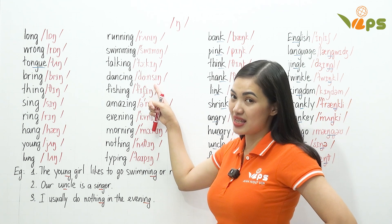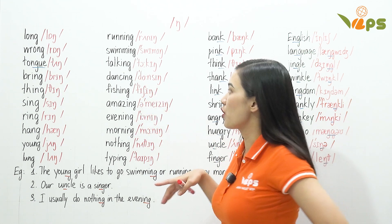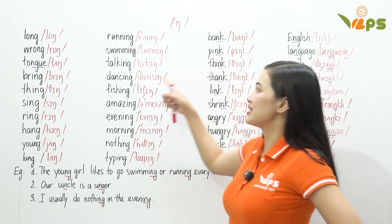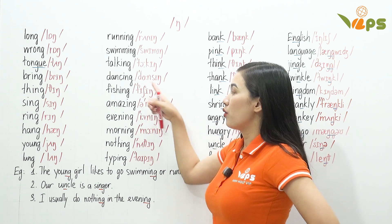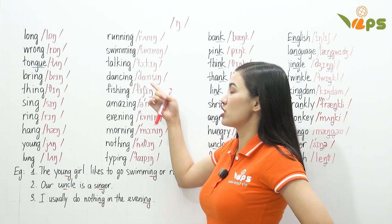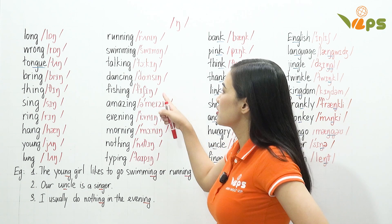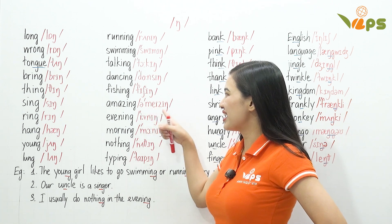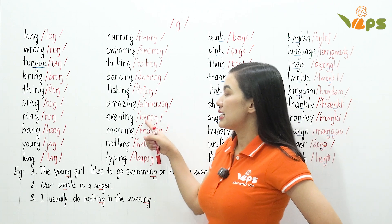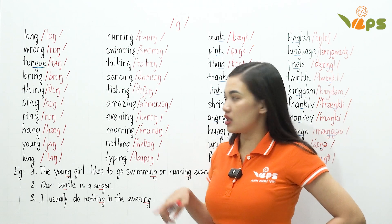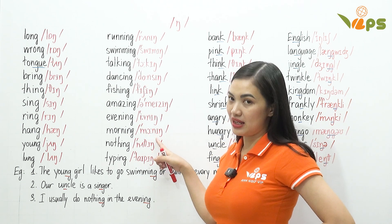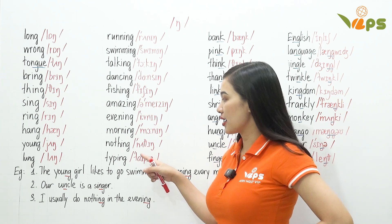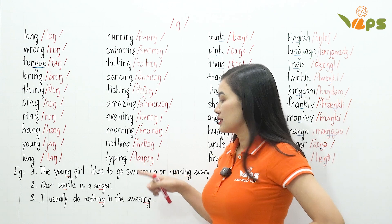Dancing. This is British English. For American English, they use a schwa — so that is dancing in American English, dancing in British English. Fishing. Amazing. Evening. Morning. Nothing. Typing.